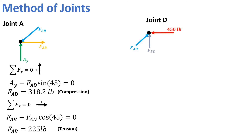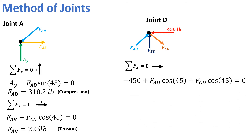Now we are analyzing joint D. Four forces act on joint D: the applied force of 450 pounds, the force in member AD, the force in member BD, and the force in member CD. Applying the sum of forces in the X direction equal to zero, taking rightward as positive, the equation is: -450 + FAD·cos45 + FCD·cos45 = 0. The 450-pound force acts left (negative), while the cosine components of AD and CD act right (positive). From this equation, the force in member CD comes out to be 318 pounds, and since the answer is positive, member CD is confirmed as a tension member.